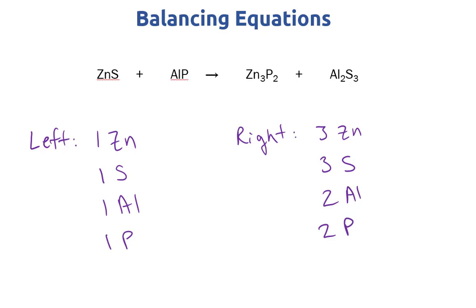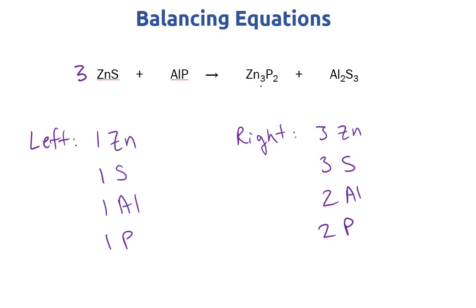What we need to do is alter the coefficients that come before the molecular formulas — for example, writing a two before Zn3P2. What we cannot do is change the subscripts. So we're not allowed to change the subscript for zinc. What we can do is put a three before ZnS, and what that does is give us three Zn and three sulfur on the left.